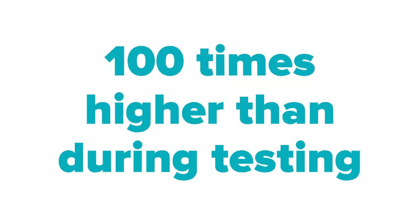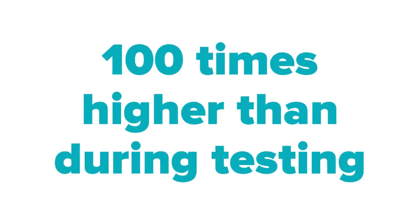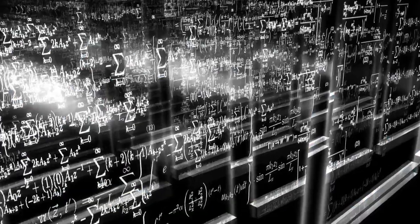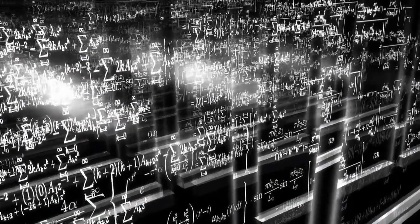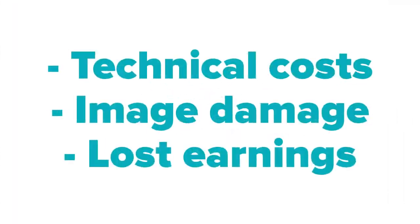In this slide you can see how the resolution of an operating anomaly has a cost up to a hundred times higher than the resolution of the same anomaly detected during testing. This is because in addition to the technical costs of resolution, the costs related to image damage and lost earnings must be added.